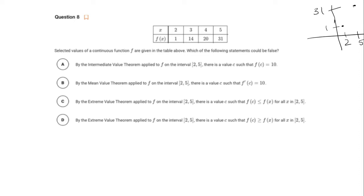So we know by the intermediate value theorem that at some point we're going to have to cross the value 10. So somewhere in between 2 to 5, the intermediate value theorem guarantees that we're going to cross 10. So A is true.